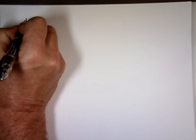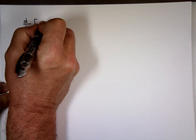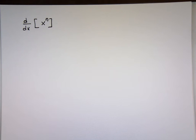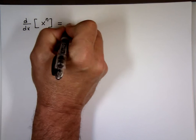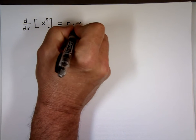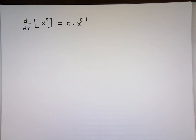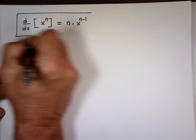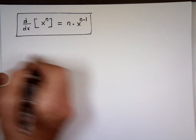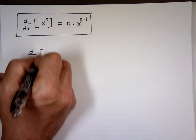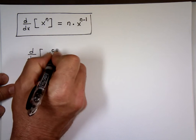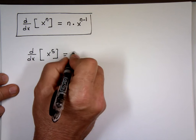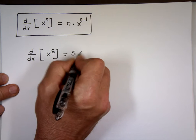Now the other rule: the derivative of x to the n is equal to n times x to the n minus 1. That's the biggie. What does that mean? The derivative of x to the 5th is: bring the power to the front, reduce the power by 1.